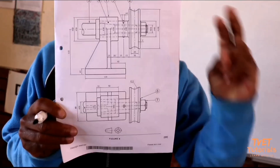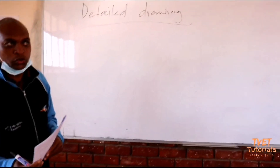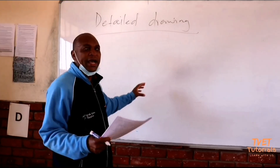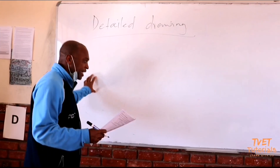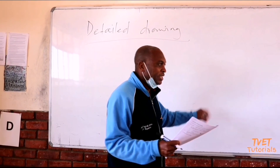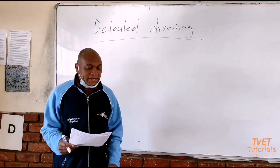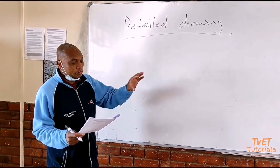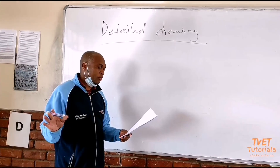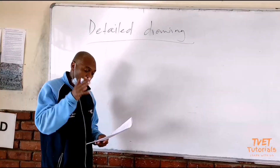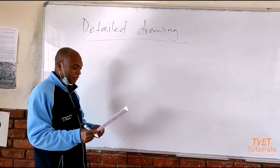We are going to remove item number one away from the rest of the machine and put it aside, then remove the next item and put it aside — that is how we perform our detailed drawing. We don't have drawing instruments right now, so we are just going to use a rough sketch to illustrate. What is important is for you to see how to remove the parts of this machine.